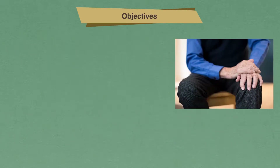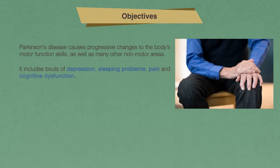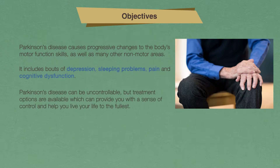Parkinson's disease, or PD, can be challenging to live with due to the fact that it causes progressive changes to the body's motor function skills, as well as many other non-motor areas, which can include bouts of depression, sleeping problems, pain, and cognitive dysfunction. This disease greatly impacts the quality of life in both yourself as well as your caregiver. Although a lot of factors of Parkinson's disease are uncontrollable, actively pursuing all of the treatment options that are available can provide you with a sense of control and help you live your life to the fullest.